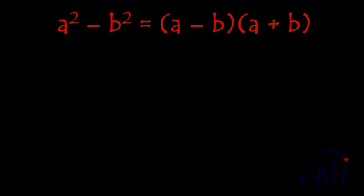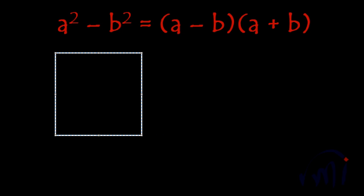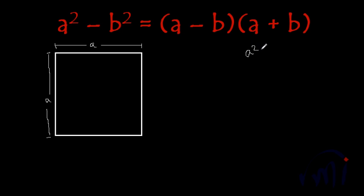Hi, so the identity we are going to learn today is a square minus b square. So a square is the area of a square whose one side is equal to a. Let me make a square. This is the square with each side equal to a, and the area of this square is a square.